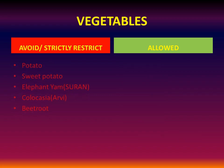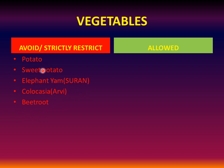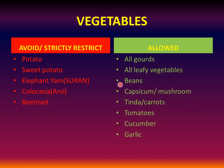Vegetables: potato, sweet potato, elephant yam (commonly known as suran or zaminkhand), colocasia (arvi), and beetroot have to be avoided — beetroot should not be taken in salads either. Allowed are all gourds — bottle gourd, bitter gourd, and other gourds — all leafy vegetables, beans, capsicum, mushroom, tinda, carrots, tomatoes, cucumber, and garlic.